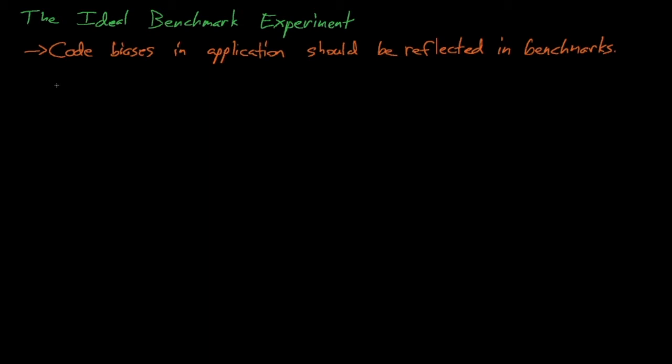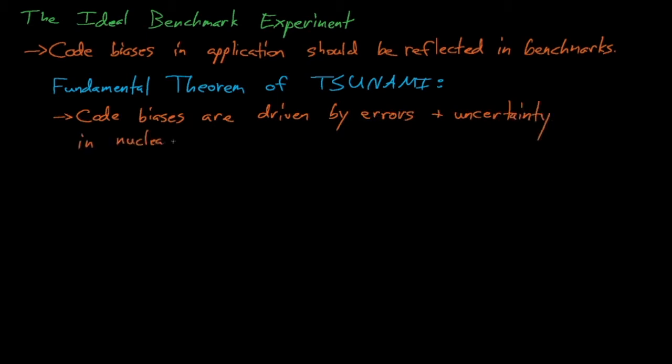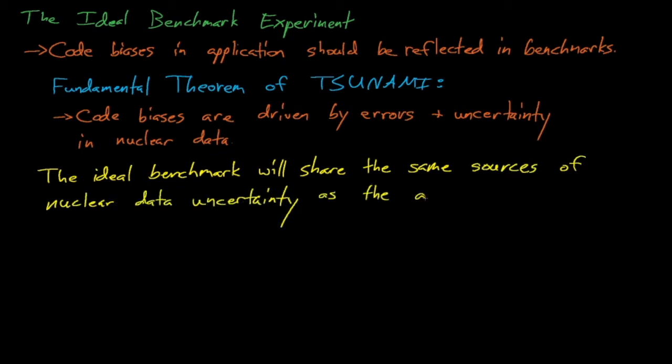If we recall the fundamental theorem of tsunami, tsunami postulates that code biases are primarily driven by errors or uncertainty in nuclear data. Because we want our benchmark to cover the same sources of computational bias as our application, and because these biases are driven primarily by uncertainty in nuclear data, then it makes sense that the ideal benchmark should share the same sources of nuclear data-induced uncertainty as the application.